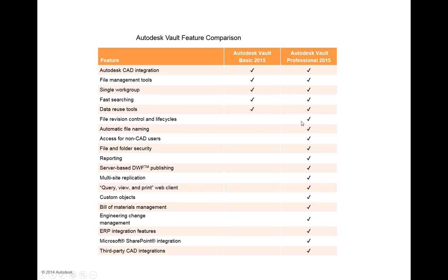Another question about exporting a DXF file for sheet metal from Vault: that would most likely be done through the job processor and a custom action. With the job processor, either when a user presses a button inside the Vault Pro client or upon release to a lifecycle state such as shop floor manufacturing, a customization can be written to export a DXF of the design at that time. Vault is also handy in that it can manage the related DXF file of that sheet metal component.